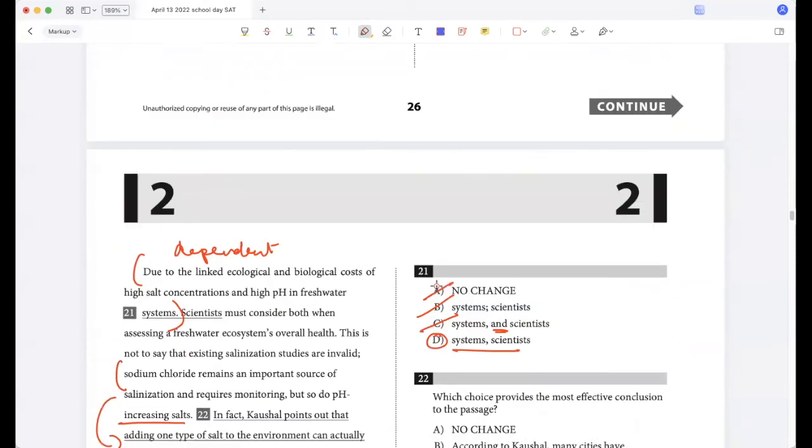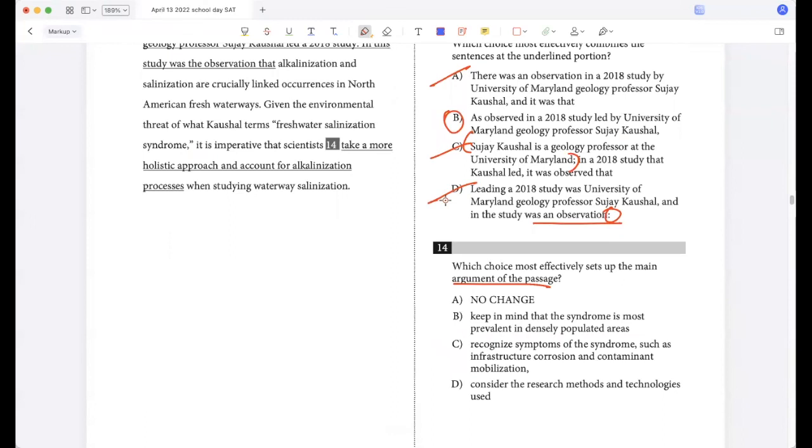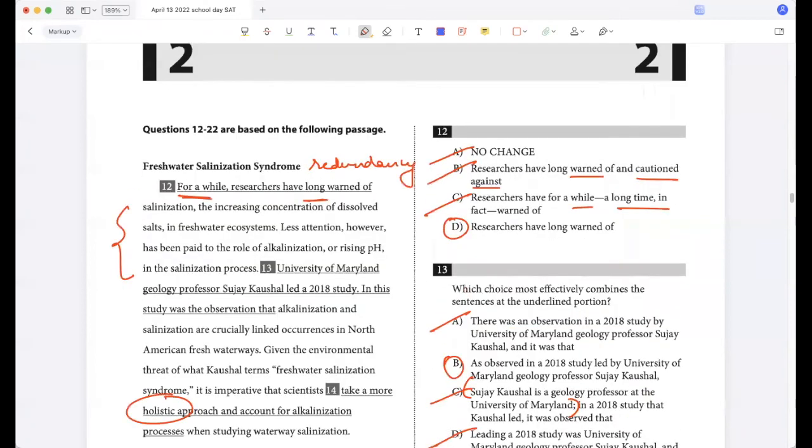Okay, let's go back and do this other one. Yeah, so given the environmental threat of what Kaushal terms freshwater salinization syndrome, it is imperative that scientists take a more holistic approach. Yeah, so I like A because that's the whole point of alkalinization. Keep in mind that the syndrome is most prevalent in densely populated areas - no, we're not talking about that in the passage. Recognize symptoms of the syndrome such as infrastructure corrosion and contaminant mobilization - no, we're talking about a holistic approach to solving it, right? So not C. Consider the research methods - no, so A is the best answer.